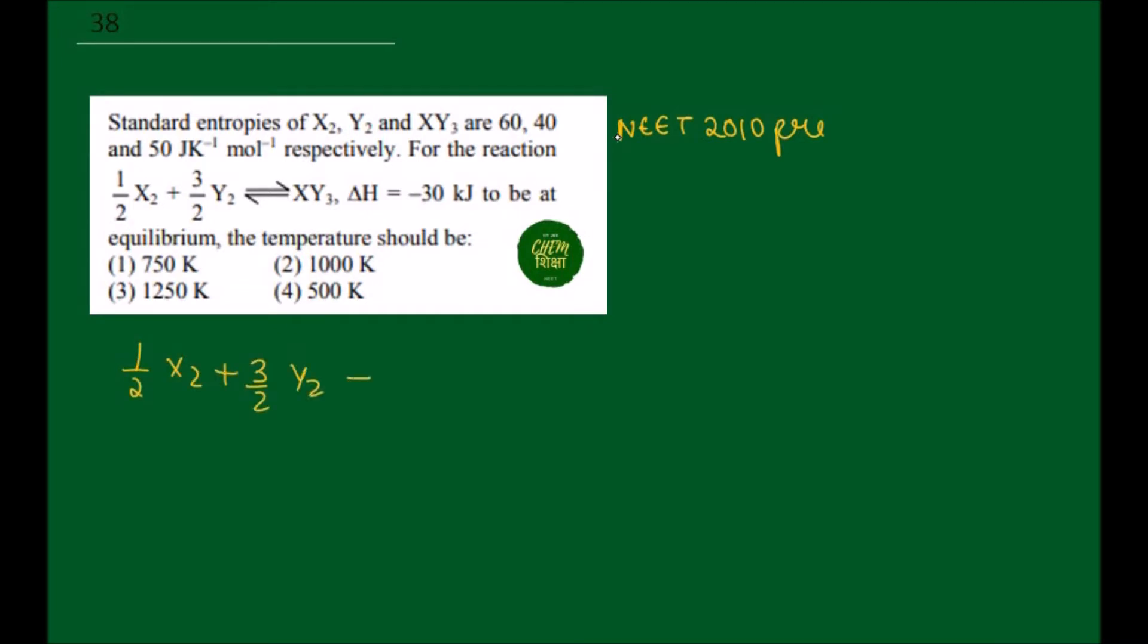So in this question we have a reaction given: half X₂ plus 3/2 Y₂ gives XY₃. The delta H value is minus 30 kilojoules.